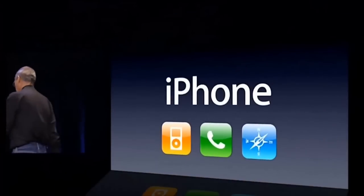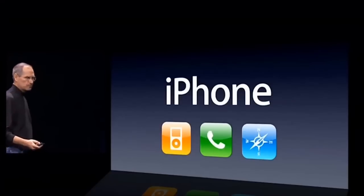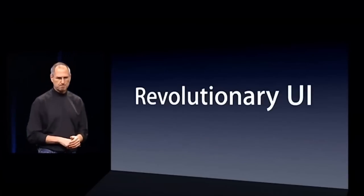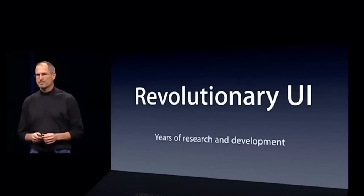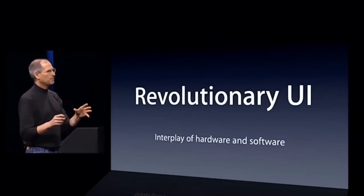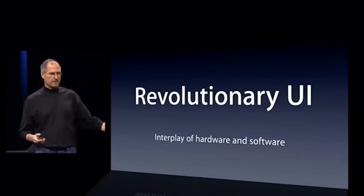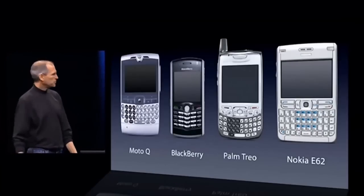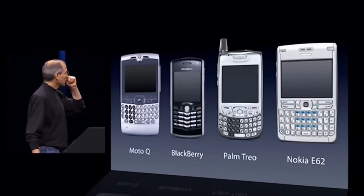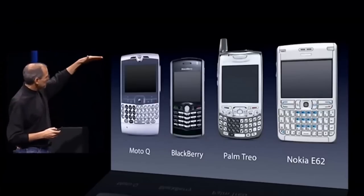We're going to reinvent the phone. We're going to start with a revolutionary user interface — the result of years of research and development, and of course it's an interplay of hardware and software. Why do we need a revolutionary user interface? Here are four smartphones: the Motorola Q, the BlackBerry, the Palm Treo, the Nokia E62 — the usual suspects. And what's wrong with their user interfaces? The problem is really in the bottom 40% there.